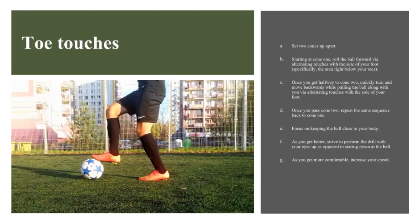Toe Touches: Set two cones apart. Starting at cone 1, roll the ball forward via alternating touches with the sole of your foot — specifically the area below your toes. Once halfway to cone 2, quickly turn and move backwards, pulling the ball along with alternating sole touches. Once past cone 2, repeat the sequence back to cone 1. Focus on keeping the ball close to your body. As you improve, perform the drill with your eyes up rather than looking down at the ball, and increase your speed.